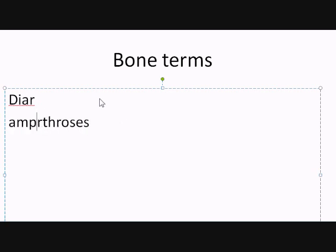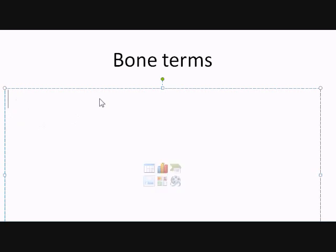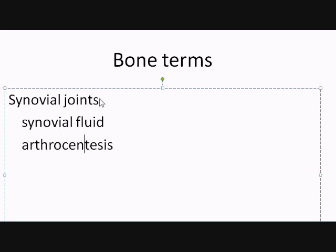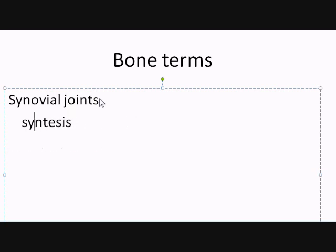Joints also allow for movement, and these are called synovial joints. Wherever you have synovial joints, you should also have synovial fluid. If you take the root 'arthro,' meaning joint, and add '-centesis,' which means removal of fluid, you get arthrocentesis — basically the removal of synovial fluid from a synovial joint. You can see how everything is quickly coming together.